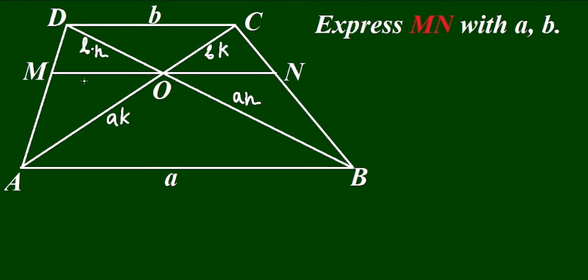So that MO over b will equal to aK over aK plus bK. And MO here will equal to, K will cancel, and we get ab over a plus b.